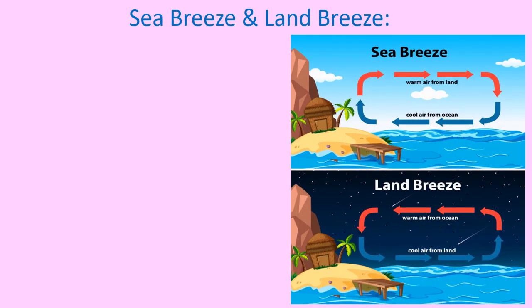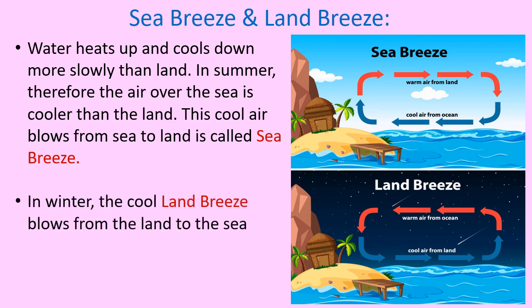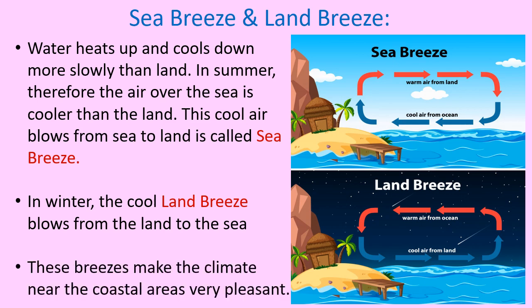Sea breeze and land breeze. Water heats up and cools down more slowly than land. In summer, the air over the sea is cooler than over the land, so this cool air flows from sea to land — this is called sea breeze. In winter, the cool land breeze flows from the land to the sea. These breezes make the climate near coastal areas very pleasant.